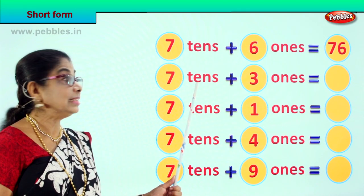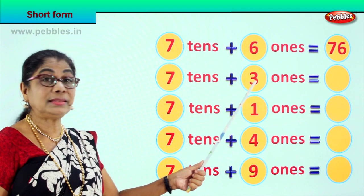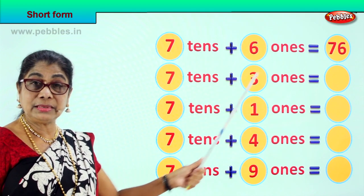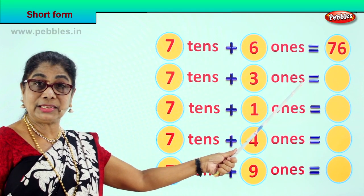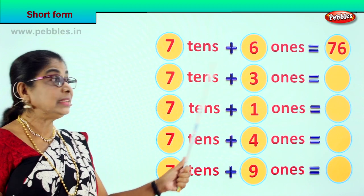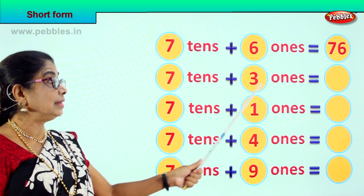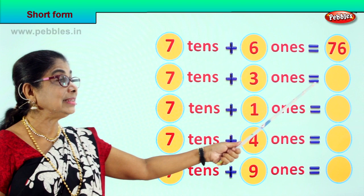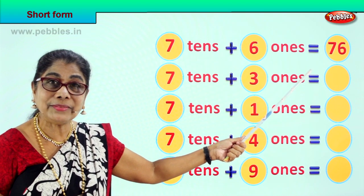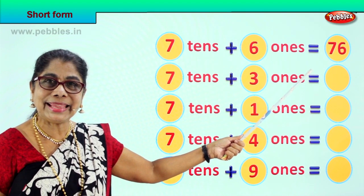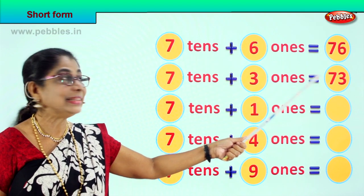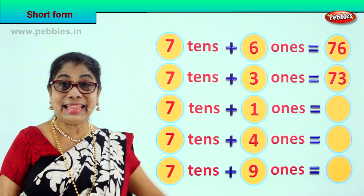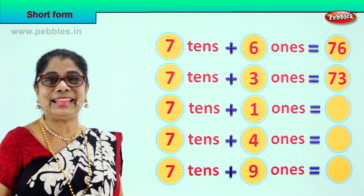7 tenths plus 3 ones. 7 tenths plus 3 ones is equal to what? 70 plus 3, 73. 7 tenths plus 3 ones is equal to? What is 70 plus 3? 73. 7 and 3? 73.